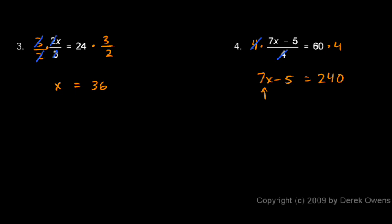we need to undo the multiplication by 7 and the subtracting 5, and we need to undo those in reverse order. So we have to get rid of the 5, and of course we do that by adding 5, and those cancel out. If we add 5 on the left, we add 5 on the right.